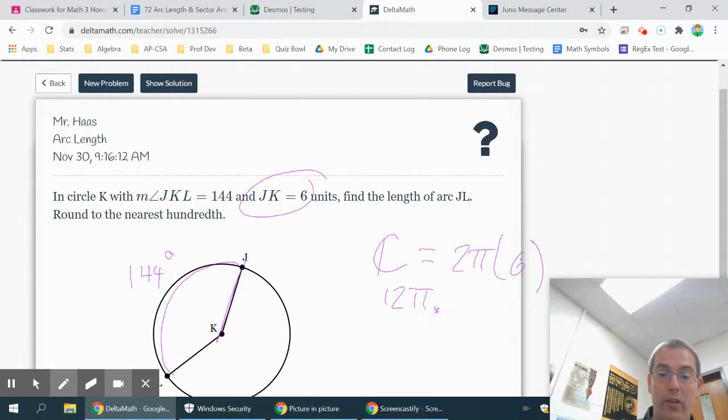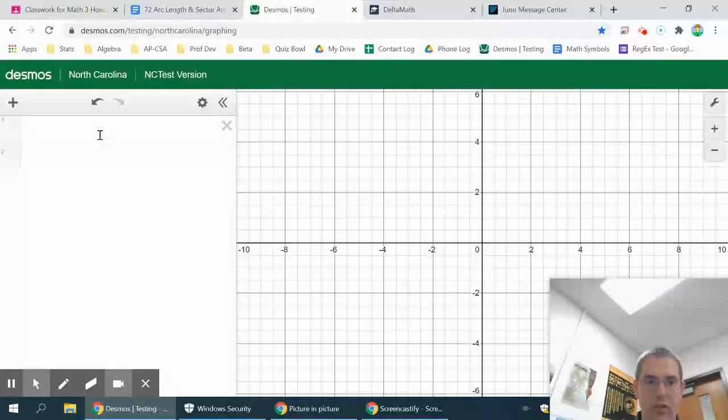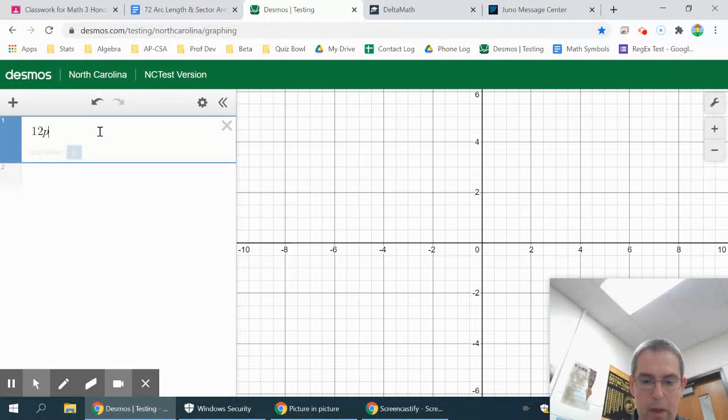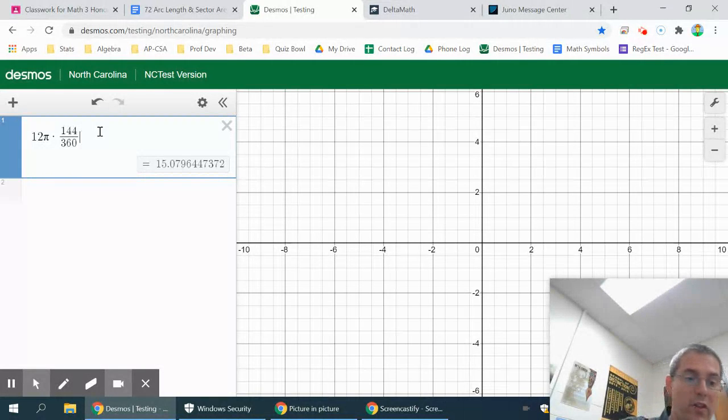Then to turn that into arc length, you just multiply by the correct proportion. In this case, it's 144 over 360. And time to pull up Desmos. So I can just do 12π times 144 over 360. Now the difference between this and what we did on our worksheet is we did want these not in terms of π, but as a decimal.